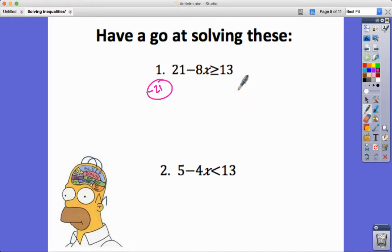So minus 21. We're going to end up with minus 8x greater than or equal to negative 8. So x, now we're dividing by a negative number at this point, so we're going to flip this, and minus 8 divided by minus 8 is 1, so we get x less than or equal to 1. Let me put in my step there that I did.